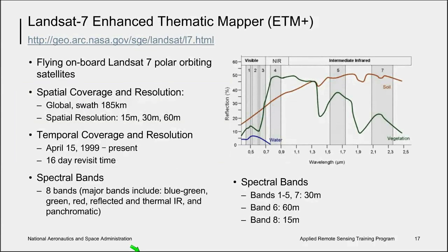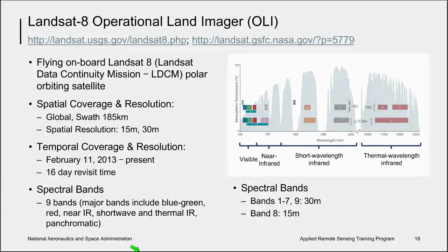Landsat 7's Enhanced Thematic Mapper launched in 1999 and has remained in operation since, with a 16-day revisit rate. Spectral bands include blue-green, green, red, panchromatic, and reflected and thermal IR. The development of Landsat 8's Operational Land Imager, or OLI, included the addition of another spectral band to improve the remote sensing of aquatic systems. With its additional coastal band, algorithms have been developed to derive chlorophyll, colored dissolved organic matter, and other water constituents.